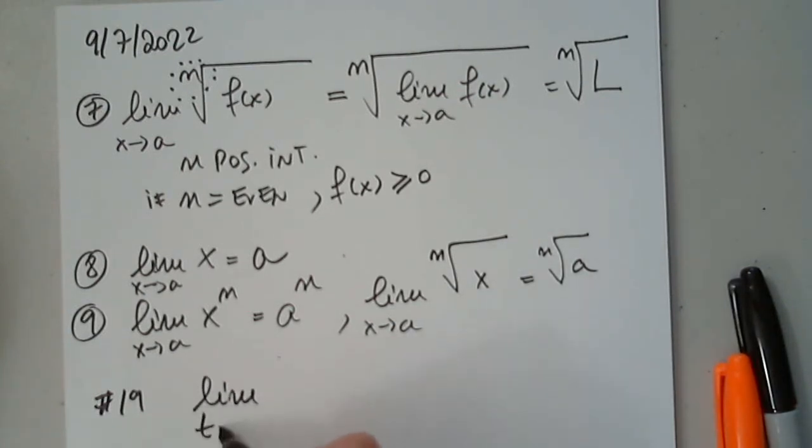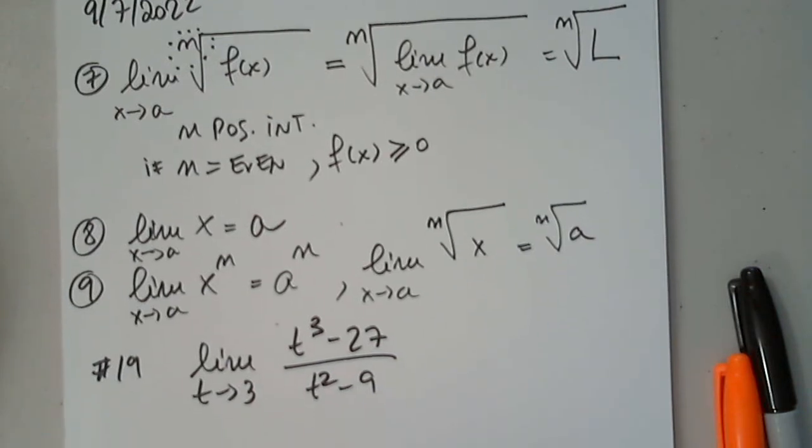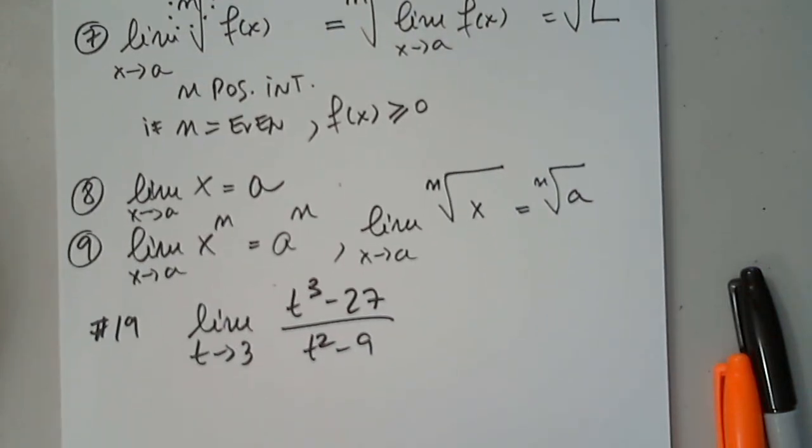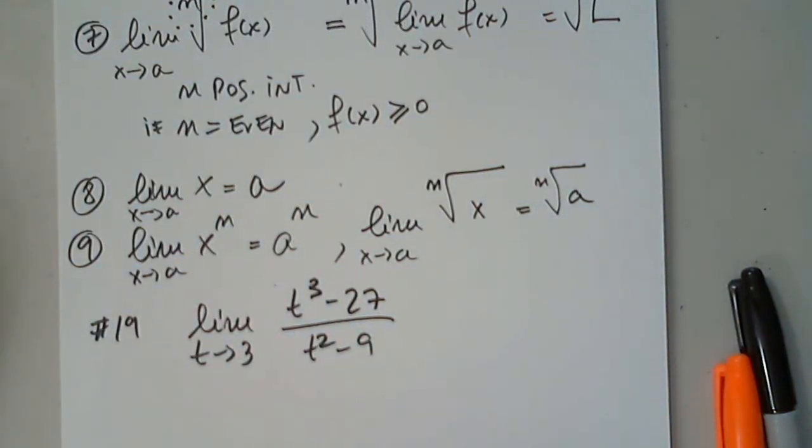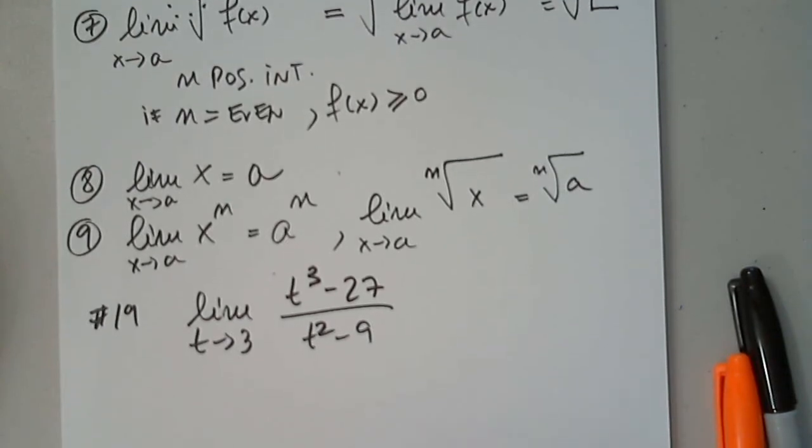I want to start with 19. 19 just caught my eye and then I'll let you go back and in the meantime, you can check, you can choose anything. So, limit as t approaches 3 from either side, t to the third minus 27 over t squared minus 9. You'll see in a moment why I chose this.